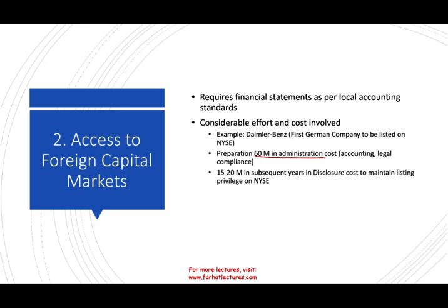It costs Daimler Chrysler 15 to 20 million in subsequent years in disclosure costs to maintain their listing privilege on the New York Stock Exchange. So there's a lot of money being spent to be listed in a foreign capital market because your accounting records are different from what the NYSE requires. In a sense, it's non-value added, because what Daimler Benz does is manufacture cars — spending money on something other than manufacturing is considered a non-value added activity.